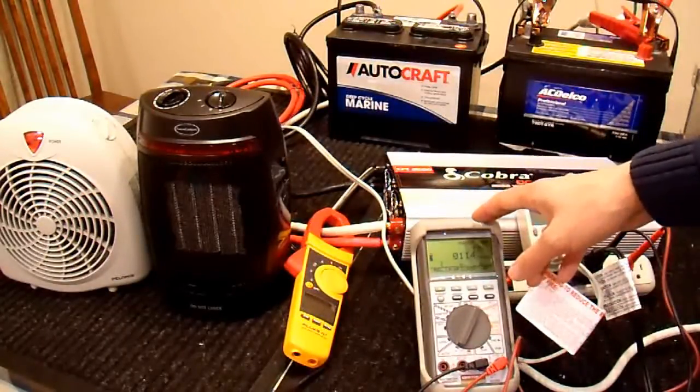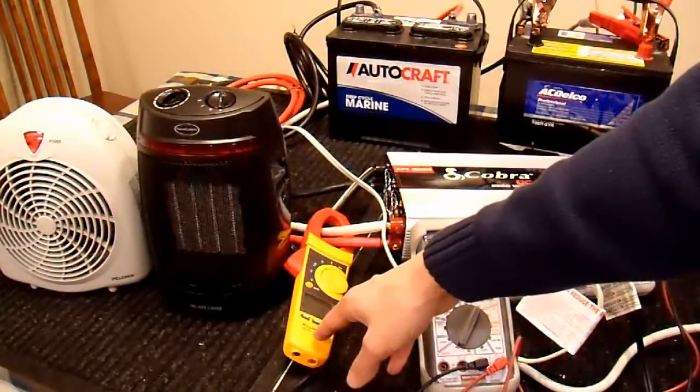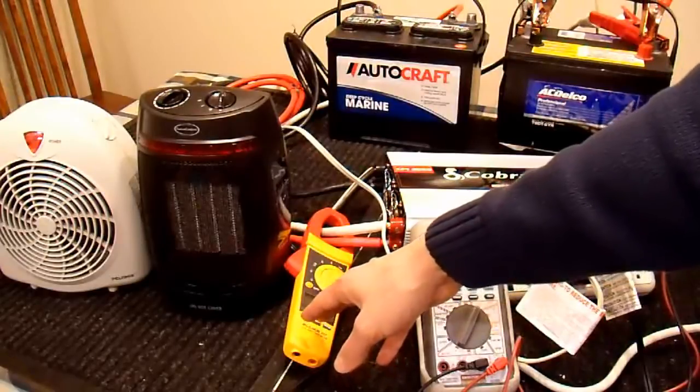I have my RMS meter plugged in, measuring the output voltage of the inverter. I have a DC clamp meter connected to the input, so we can see how many amps it's drawing from the batteries.